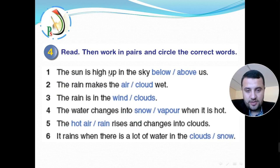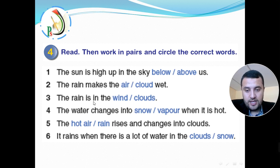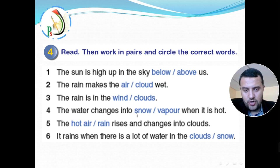Let's read them and circle the correct words. One: the sun is high up in the sky — below or above us? Where's the sun — is it below or above us? Circle the correct answer. Two: the sun or the rain makes the air or cloud — the rain makes the air or cloud wet. Three: the rain is in the clouds or the wind. Four: the water changes into snow or vapor when it is hot.